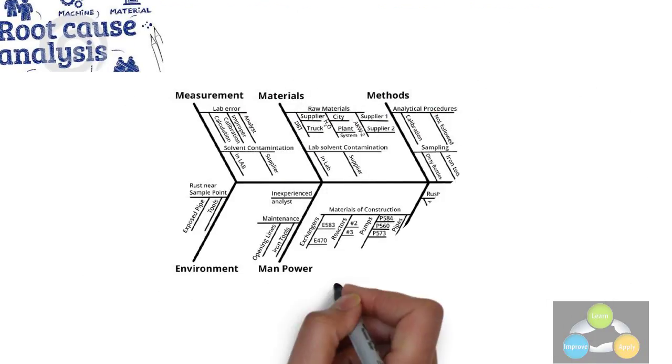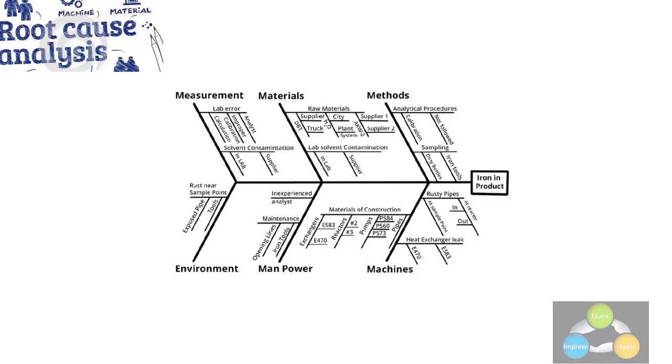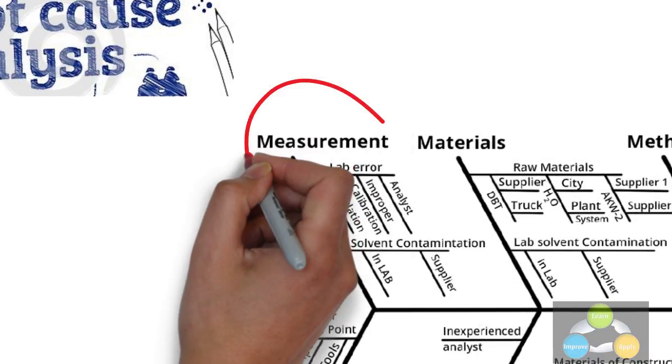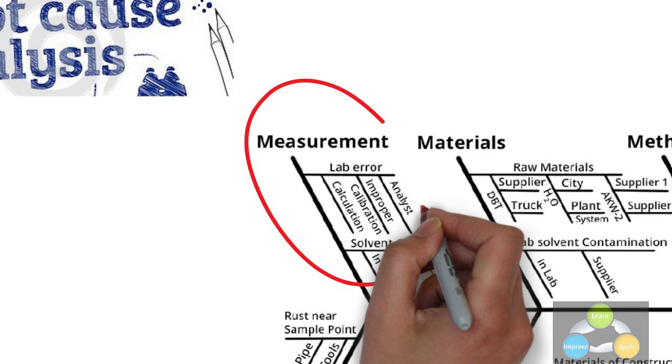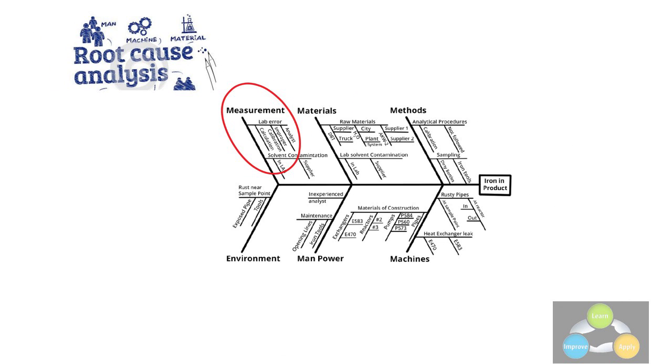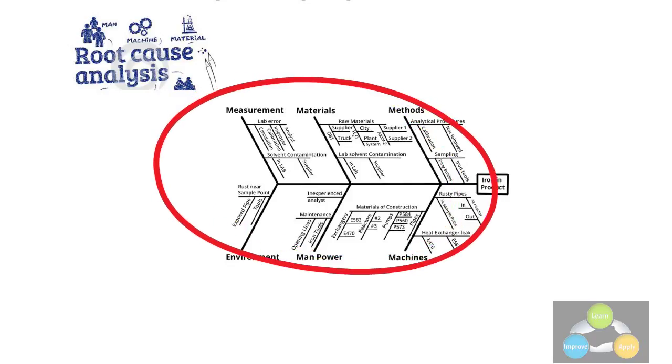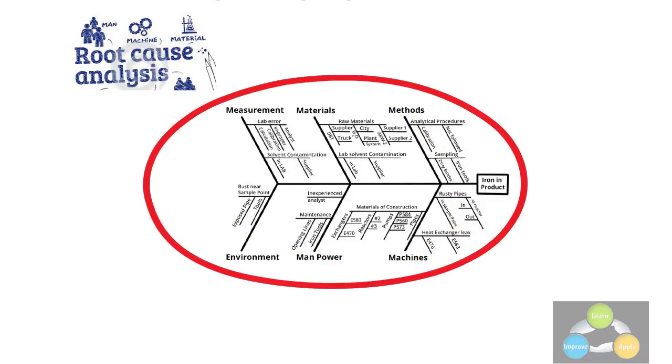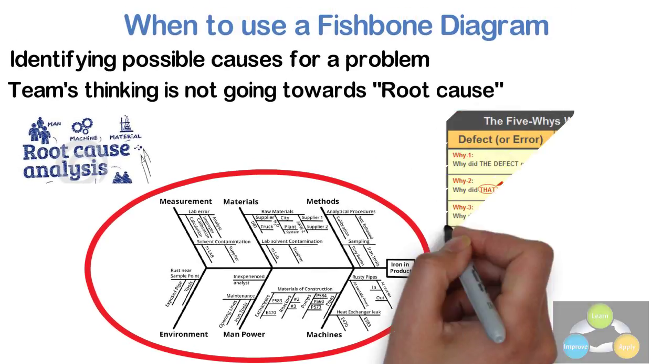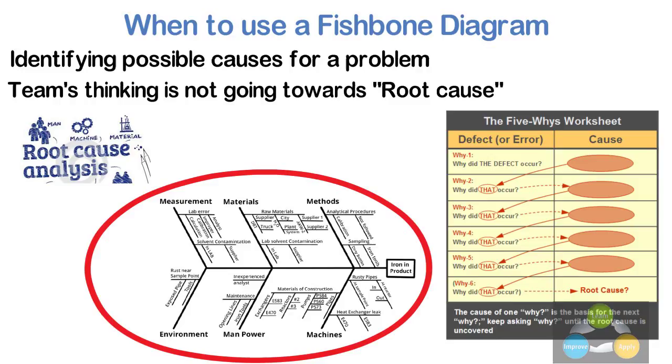The causes emerged by analysis, often through brainstorming sessions, are grouped into categories on the main branches of the fishbone. To help structure the approach, the categories are often selected from one of the common models shown below, but may emerge as something unique to the application in a specific case. Each potential cause is traced back to find the root cause, often using the 5 Why analysis technique.